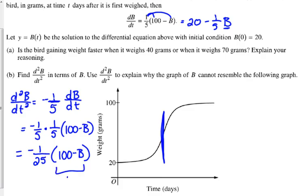So 100 minus B is going to be positive. It's weight, according to this graph, doesn't go above 100 grams. So this part is going to be positive. This is negative. So that means the second derivative is always negative, which means the original is always concave down. Part of this graph is concave up.